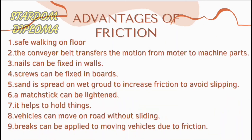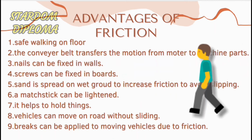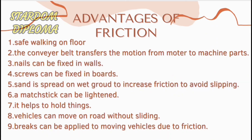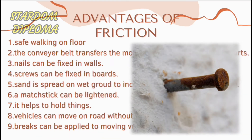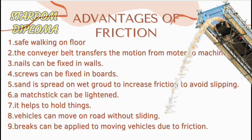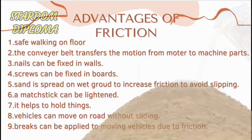Now we have seen what friction is, its types, laws, and coefficients. Let us now look at the advantages and disadvantages of friction. Friction helps for safe walking on the floor — we can walk, run, and stand due to friction, as it provides grip between our foot and the floor. The conveyor belt transfers motion from the motor to machine parts. Nails can be fixed in walls due to friction, and screws can be fixed on boards. Sand is spread on wet ground to increase friction and avoid slipping, providing grip between the ground and our feet.